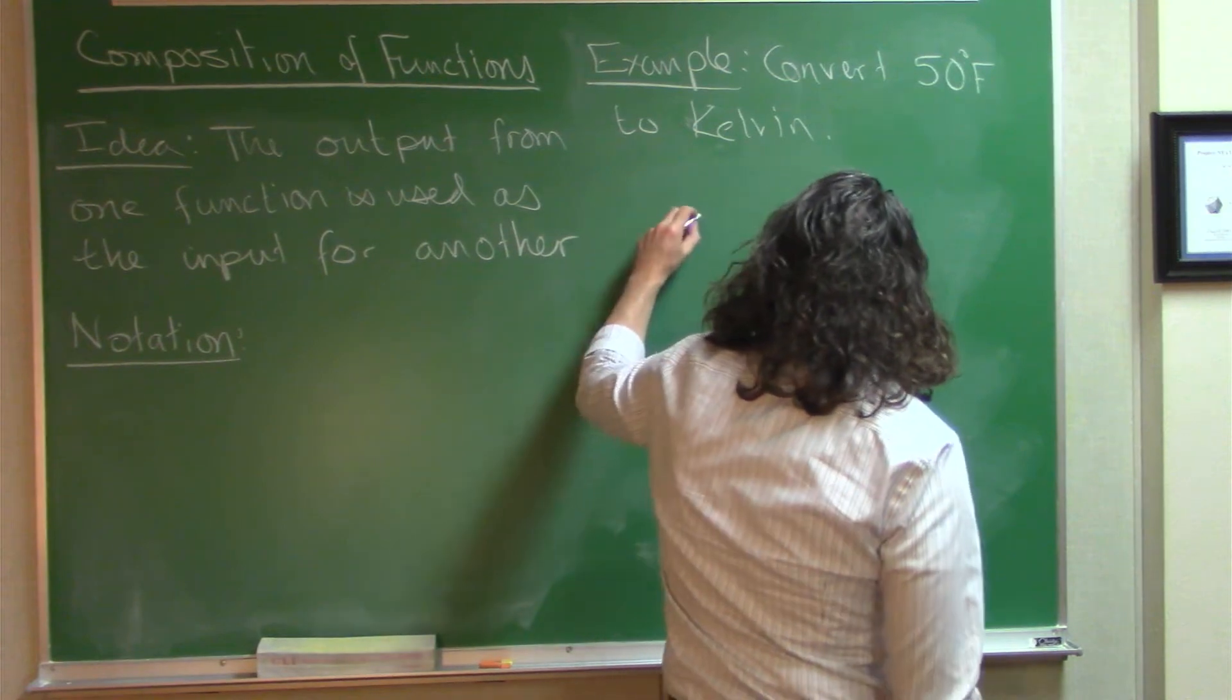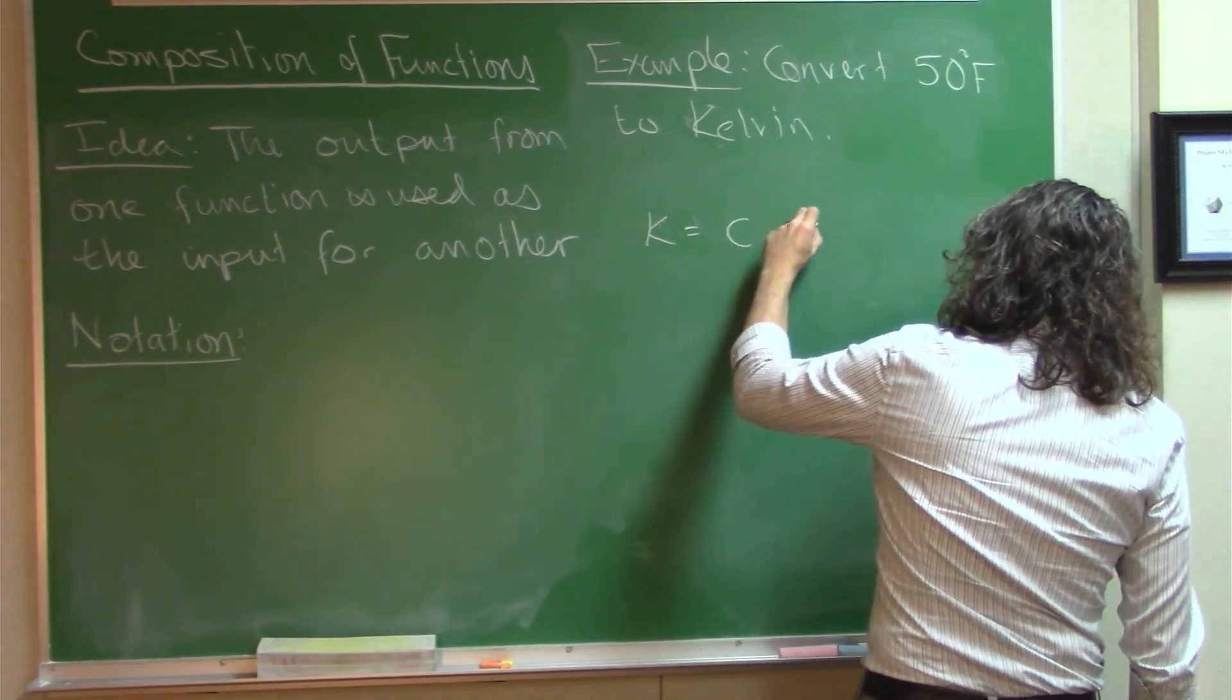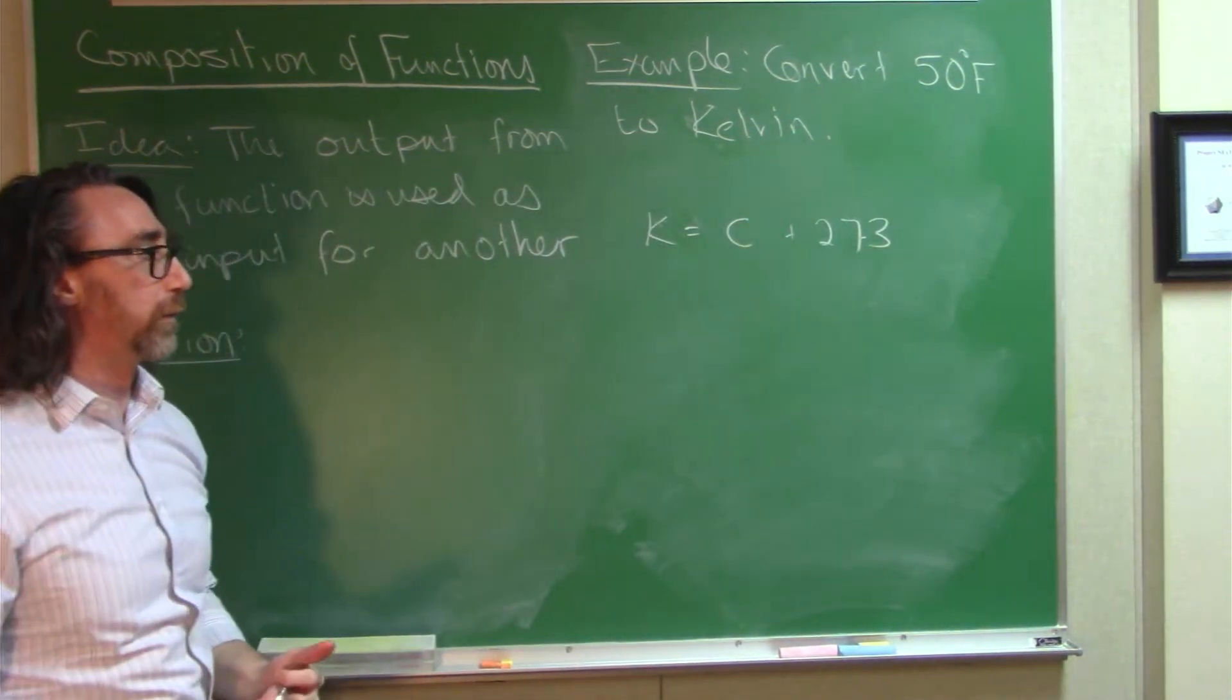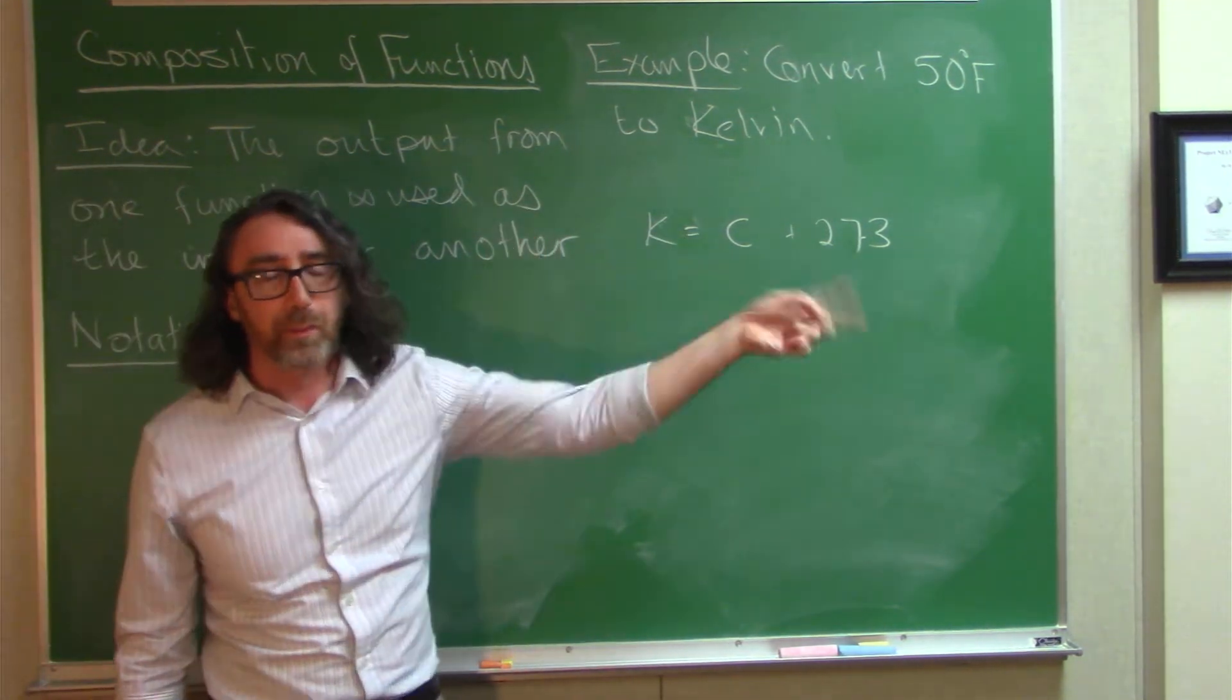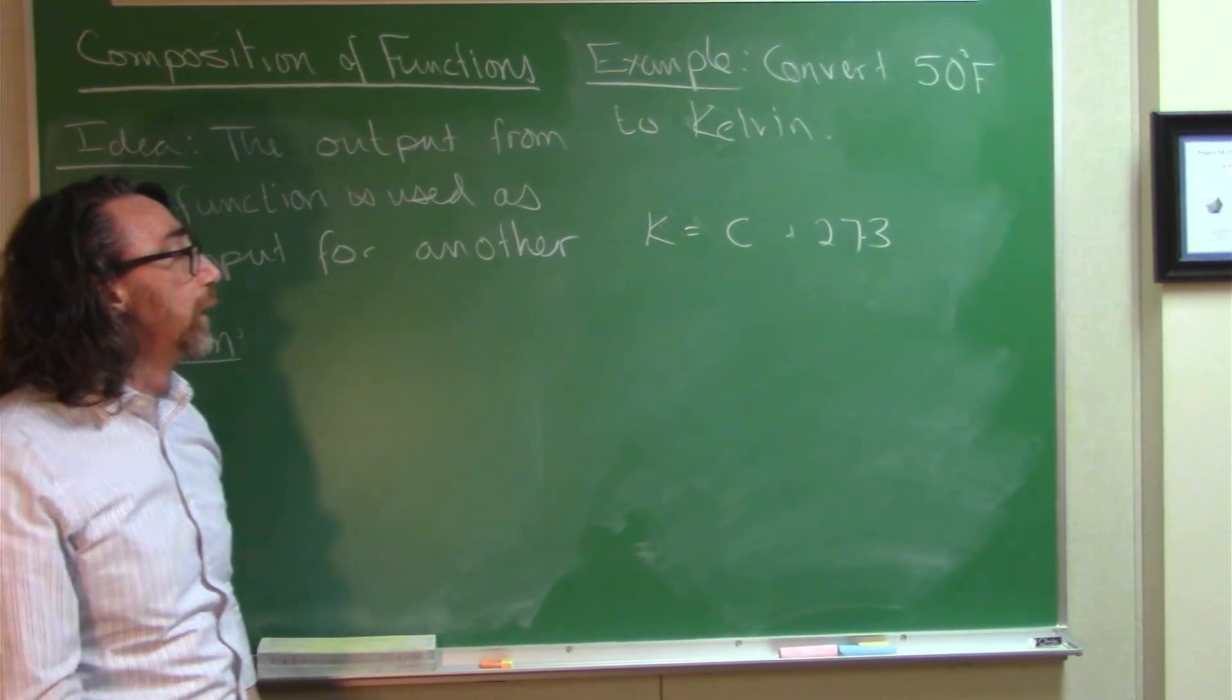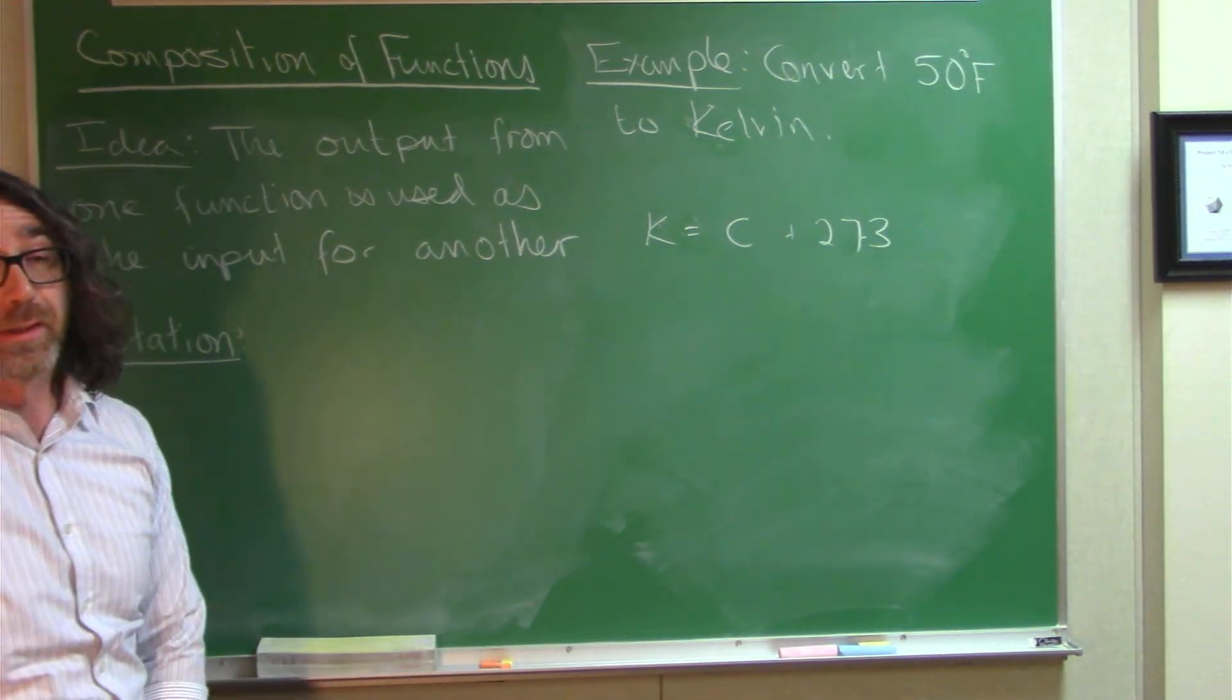So, basically, to convert to Kelvin, the rule is this. I left off the decimal points there, but this is the basic idea. You take the Celsius temperature, and you add 273 to that Celsius temperature. Well, the problem here is we don't have the Celsius temperature, we have the Fahrenheit temperature.